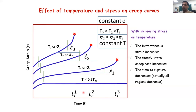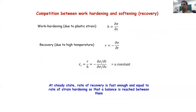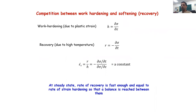The rupture time also changes: TR1 (lowest temperature) is largest, TR2 is decreased, and TR3 is even lower. Now consider the effect of stress — with temperature constant and stress increasing (σ1 < σ2 < σ3) — the effect is similar. Strain rate increases with increasing stress; the stage 1-to-stage 2 transition happens faster, and so does the stage 2-to-stage 3 transition.